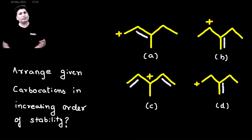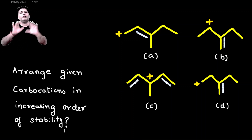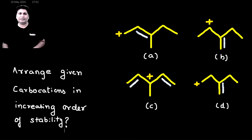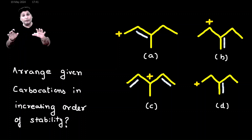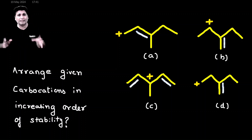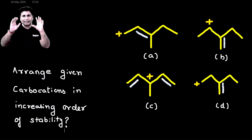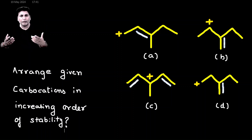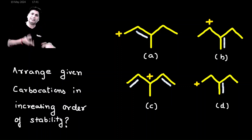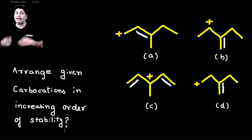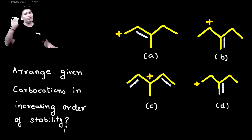I have given four structures A, B, C, and D — all four are carbocations. This is the type of problem normally asked in your exams and class tests: you have four carbocations and you have to assess which is more stable and which is less stable, and arrange them in increasing order of stability, starting from the least stable to the most stable.